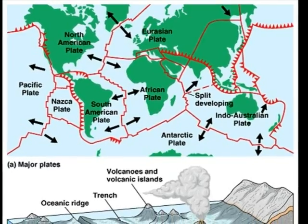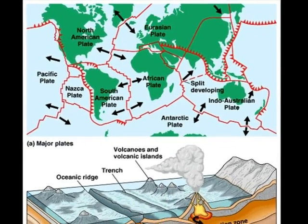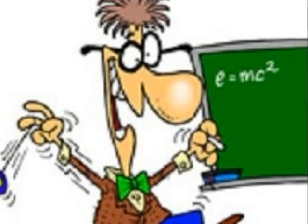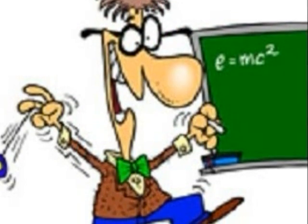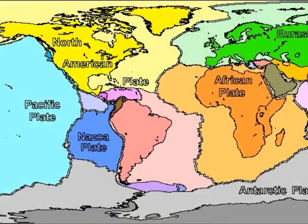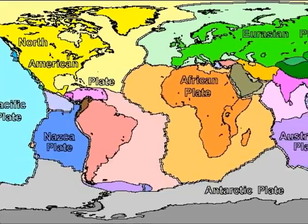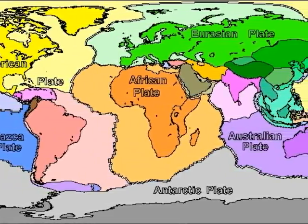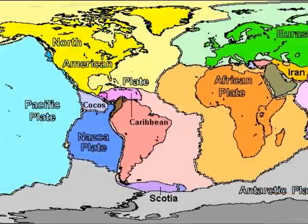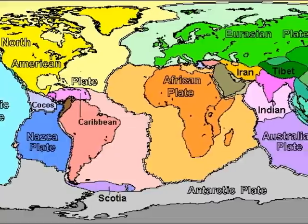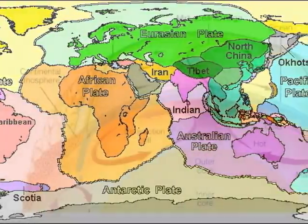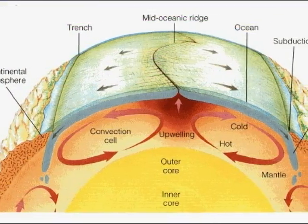Now let's discuss the other theory — the theory of plate tectonics, no drifting away. It explains earth's motion, because there are seven major plates which move, and there are others too. Convection currents move around.